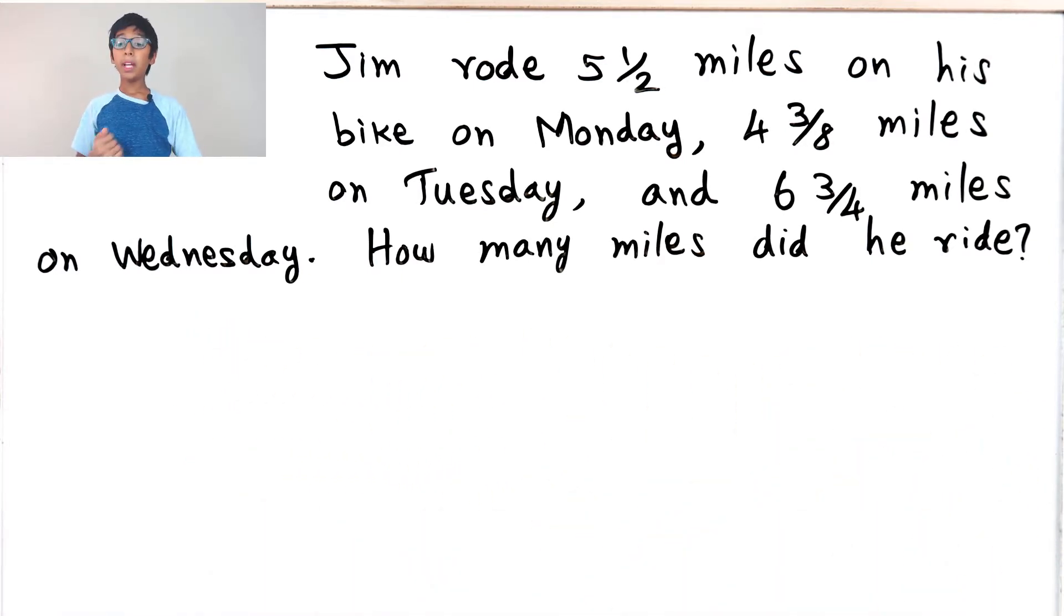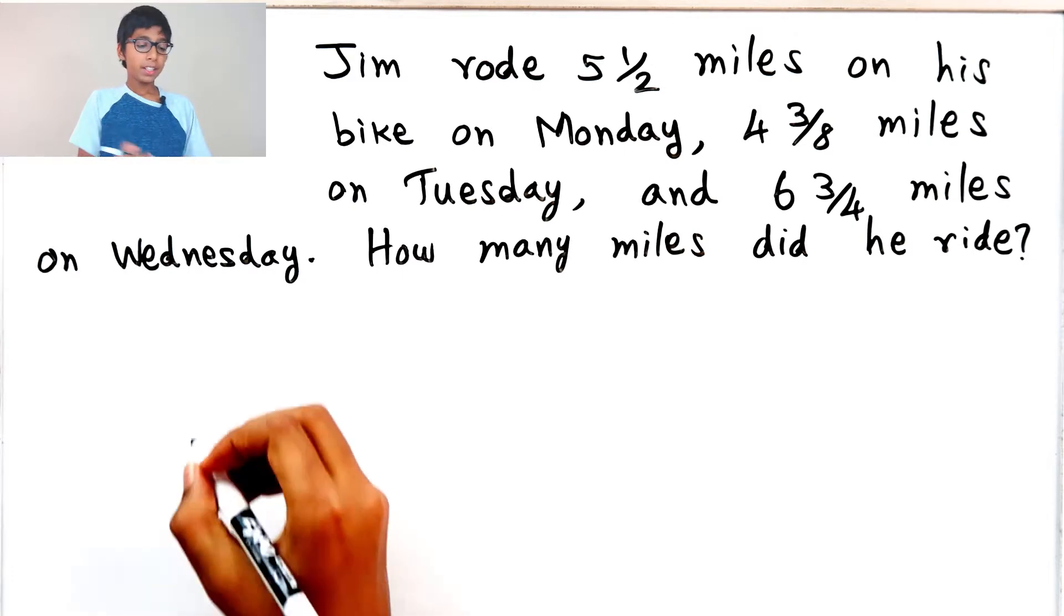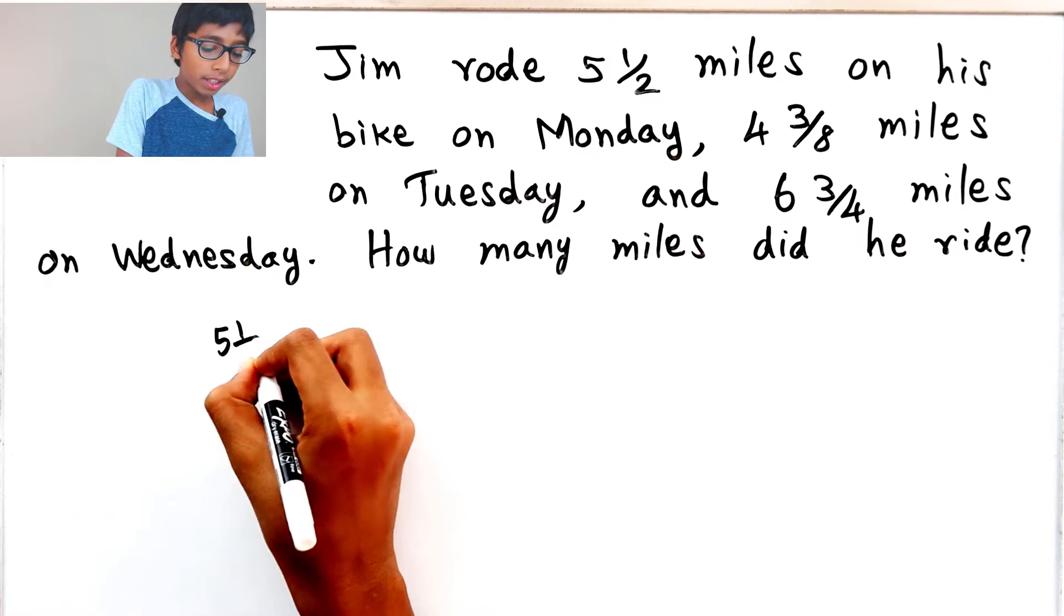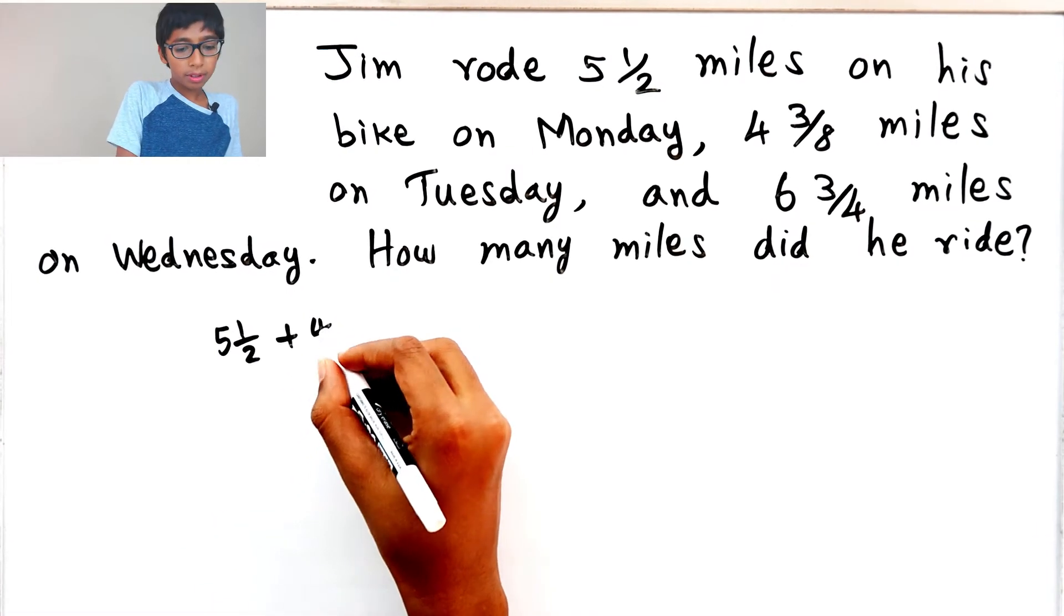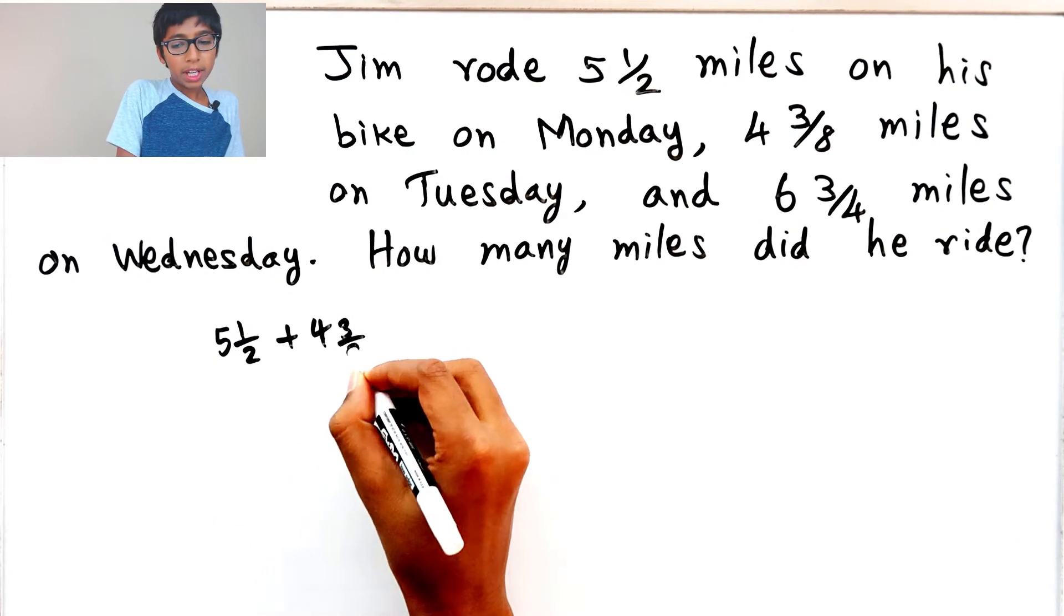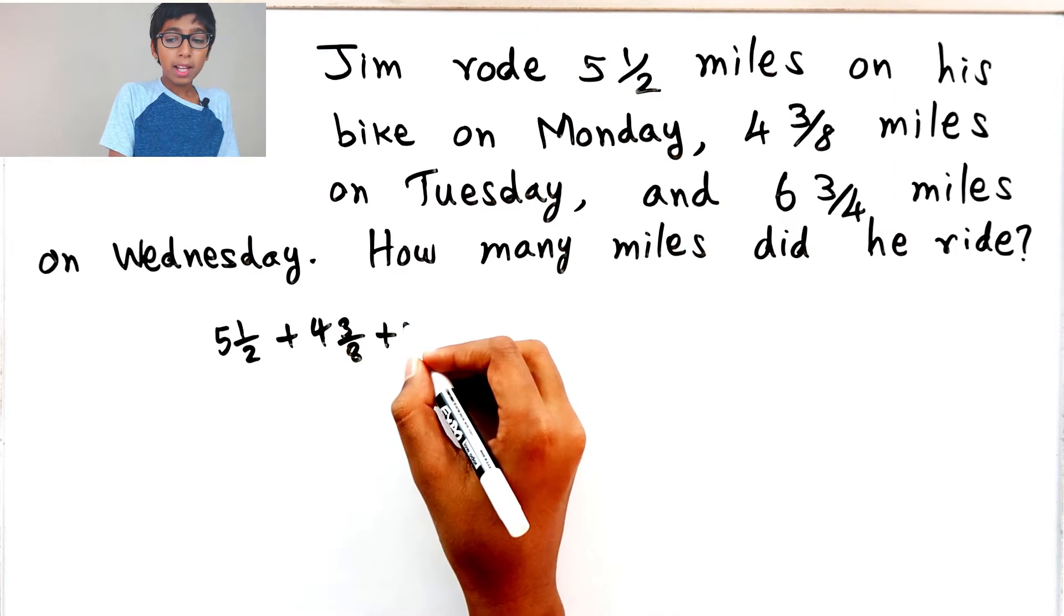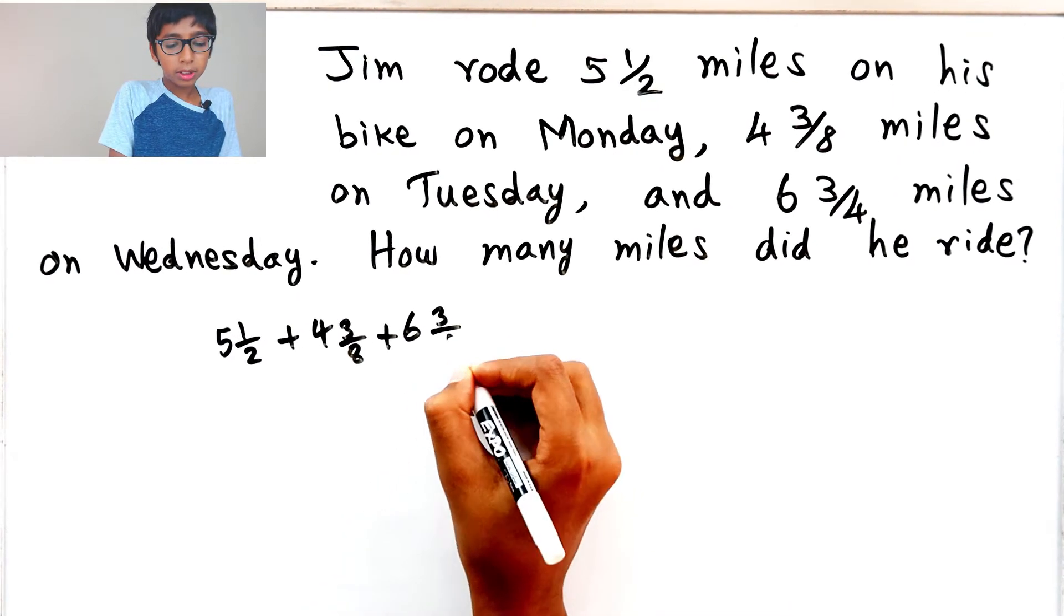So we basically just have to add. So it could be 5 1/2 miles plus 4 3/8 plus 6 3/4.